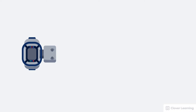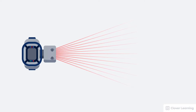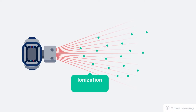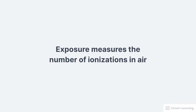We'll start by talking about exposure, which is the traditional way of measuring radiation in air. To understand exposure, we have to understand ionization. When the x-ray beam passes through air or any form of matter, it will interact with air molecules and knock electrons out of orbit. This process is called ionization because ions or charged particles like free electrons have been created, and we measure these ionizations as exposure. Exposure is a measurement that tells us the number of ionizations in air.